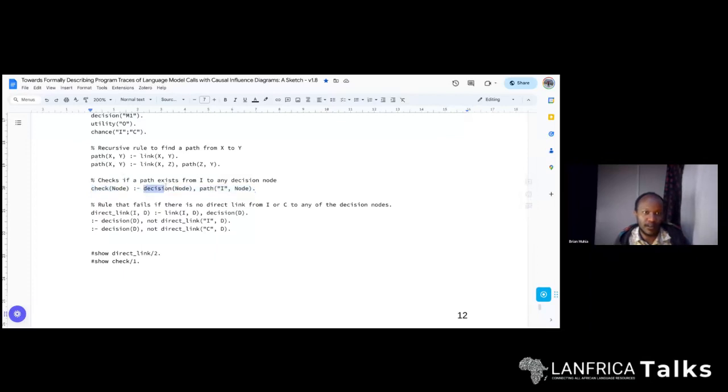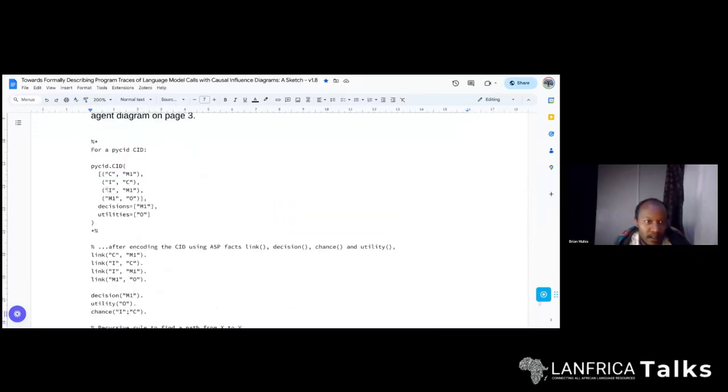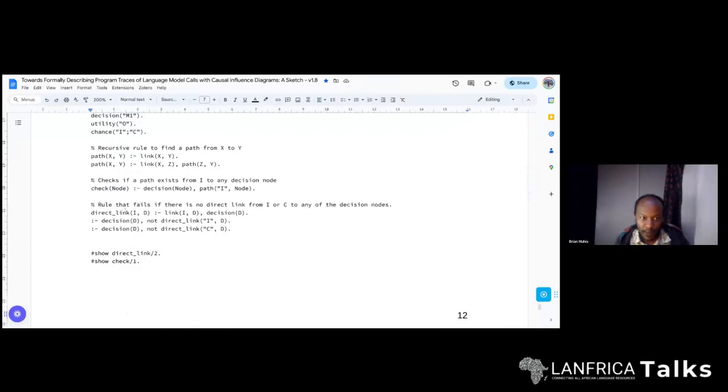So we're saying path X, Y is valid or has stable models if link X, Y is valid. And then path X, Y, the second part of this says path X, Y is valid if link X, Z is valid for path Z, Y. So if you notice that you've introduced a new node in the middle, Z. Basically, this is saying if you have X and then Y, that's true. That's correct. But if you have X and then Z and then Y, that's also correct. So that's what that supports. And the second one is the check that actually uses this rule, path X, Y. Basically saying that for decision node, you should have path between I and node. So it'll check whether there are any nodes in between, it'll check and it'll accept them. Then the last rule checks and fails if there's no direct link between I and C, rather from I or C to any of the decision nodes.